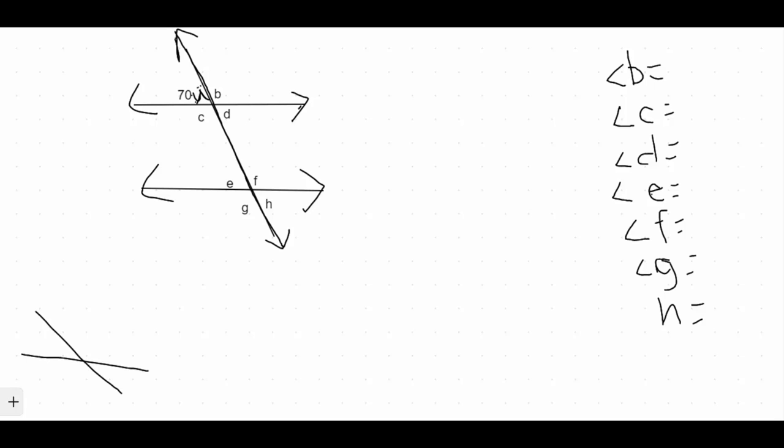Vertical angles are angles that are opposite each other. So if two lines intersect, the two angles across from each other are called vertical angles, and vertical angles are congruent. They are equal to each other. So if angle A is 70 degrees, its vertical angle is angle D, which means D also has to be 70 degrees.